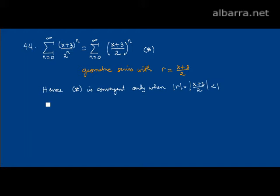Now this inequality |(x+3)/2| < 1 is equivalent to |x+3| < 2, and this is again equivalent to x+3 between -2 and 2.